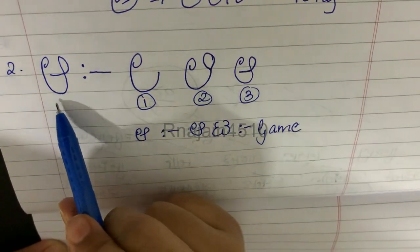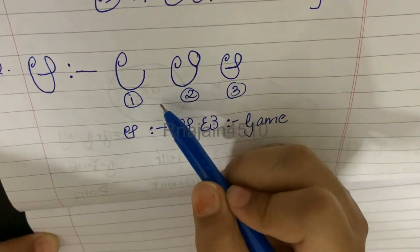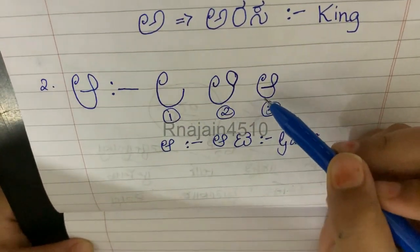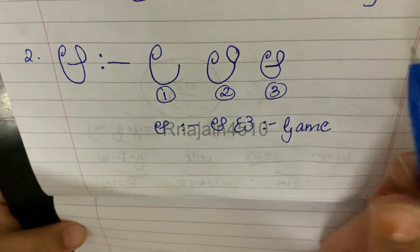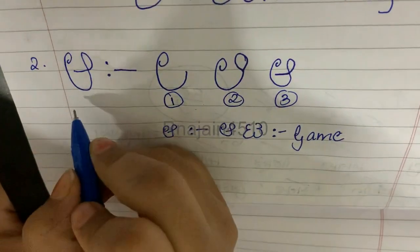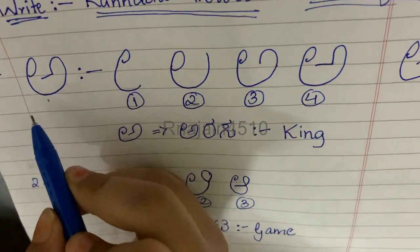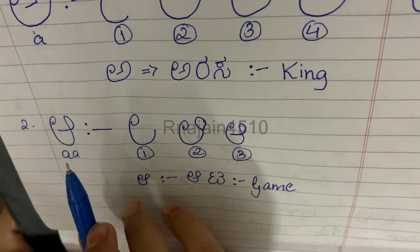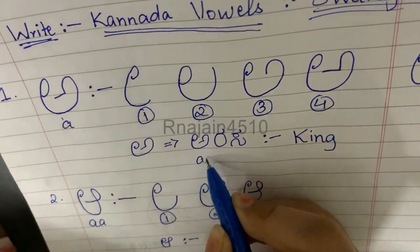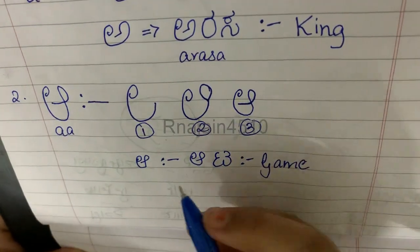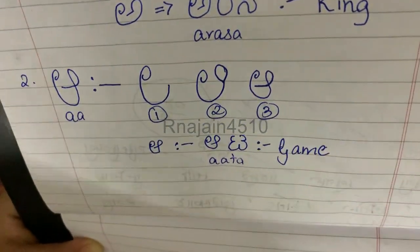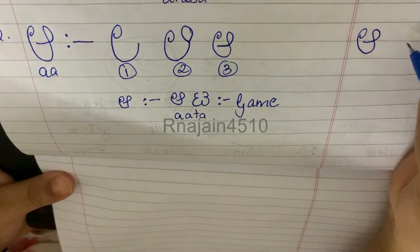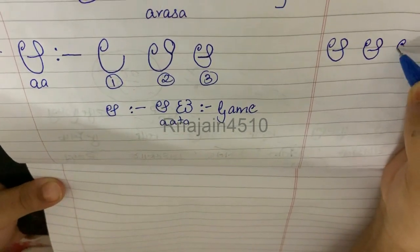The second Swaragalu in Kannada is A. The first step is E. After E, you have to make a pointed circle, then a sleeping line. There are three steps in Kannada A, and the English pronunciation is A. Now we will practice A two or three times.